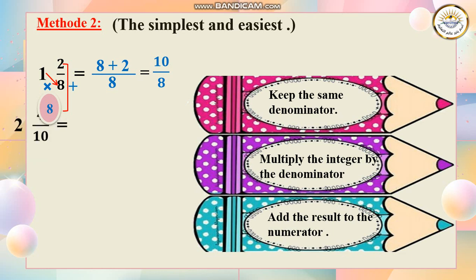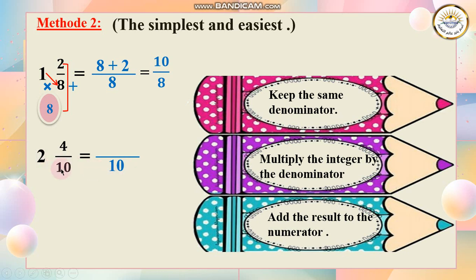Here I have another example. I keep the denominator and write over 10. Then I do 2 times 10, which is 20. 20 plus 4 is 24. So the answer is 24 over 10.